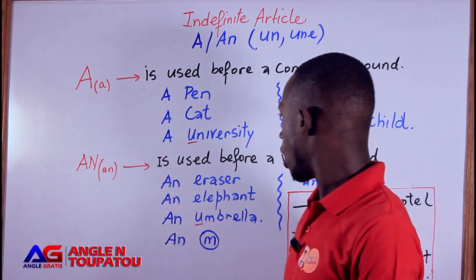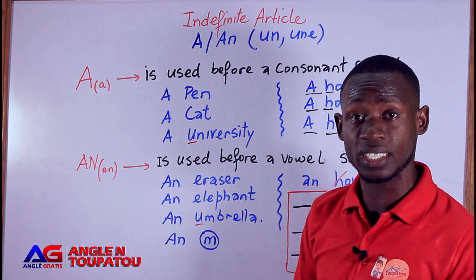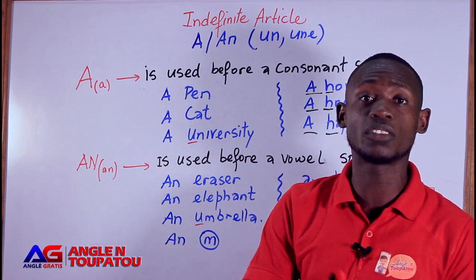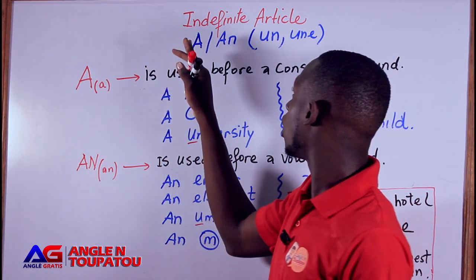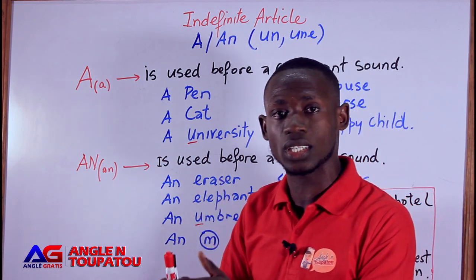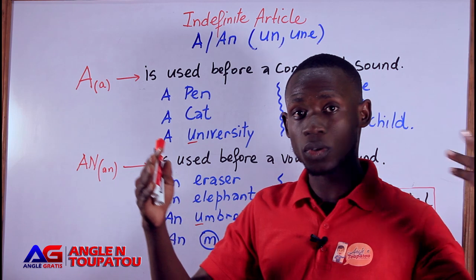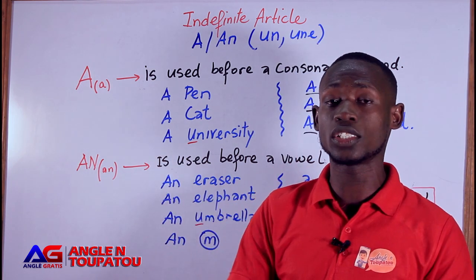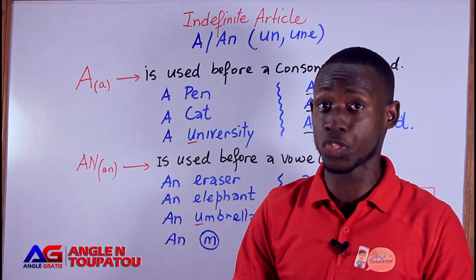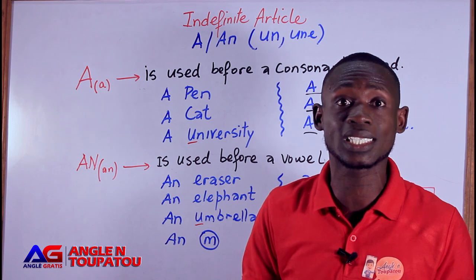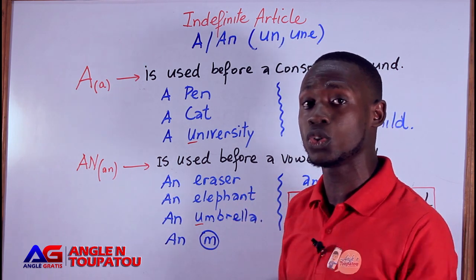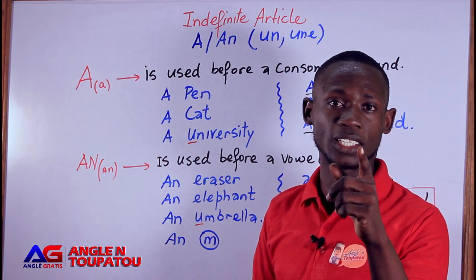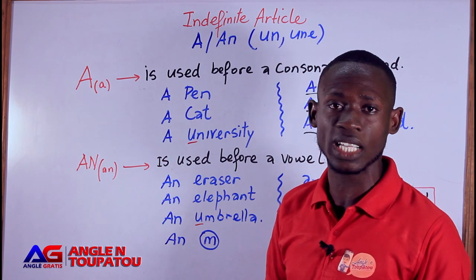Don't forget — today we talked about the indefinite article: how you can pronounce 'A' and 'AN', and how you can use them in front of nouns. In the next video, we'll cover how to use the definite, indefinite, and zero article, with more sentences to practice together. Don't forget to share the video on Facebook or WhatsApp — it helps us keep making content. Love yourself and believe in yourself. See you in the next video!